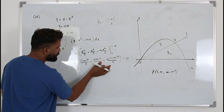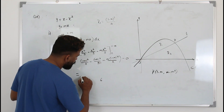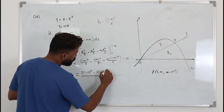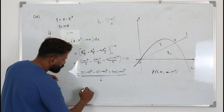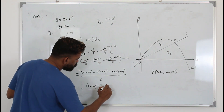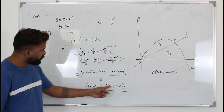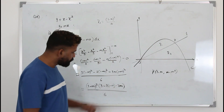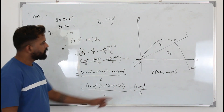Taking 6 as a common denominator: 3 times (1 minus m) squared minus 2 times (1 minus m) cubed minus 3m times (1 minus m) squared, all over 6. Factoring out (1 minus m) squared gives (1 minus m) squared times (3 minus 2(1 minus m) minus 3m) over 6. Simplifying the bracket: 3 minus 2 plus 2m minus 3m equals 1 minus m. So the result is (1 minus m) cubed over 6, confirming the area of R1.